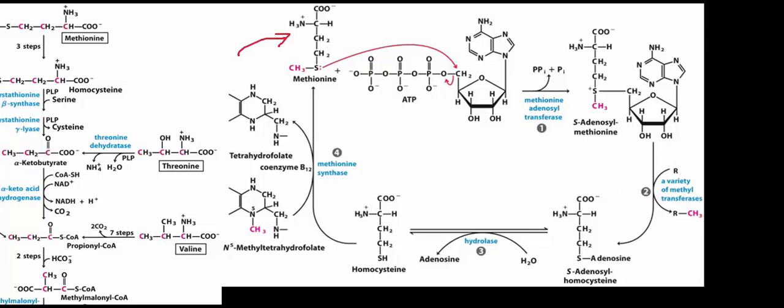Then a methyl transferase transfers the methyl group to some other molecule, generating S-adenosyl homocysteine, often abbreviated SAH. You could consider the degradation pathway beginning with SAH. In fact, methionine adenosyl transferase and the methyl transferase are really biosynthetic reactions rather than degradative ones.